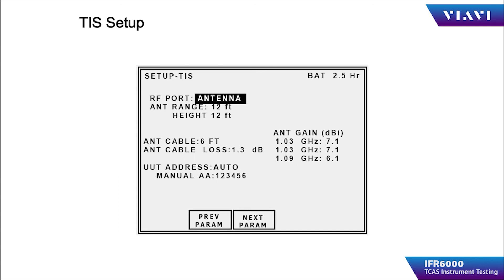Setup for the traffic information system is similar to any of the other modes inside of the IFR 6000. Pressing run test on the IFR 6000 will engage the scenario as set up by the operator. The configured target should be displayed on the traffic information system display.